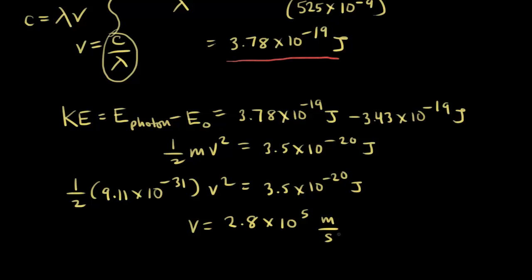If you increased the intensity of this light — so you had more photons — they would produce more photoelectrons. One photon knocks out one photoelectron, provided it has enough energy to do so.